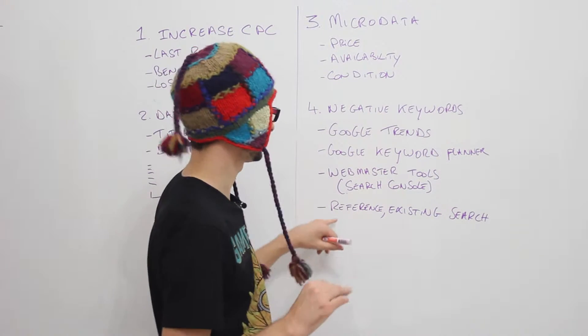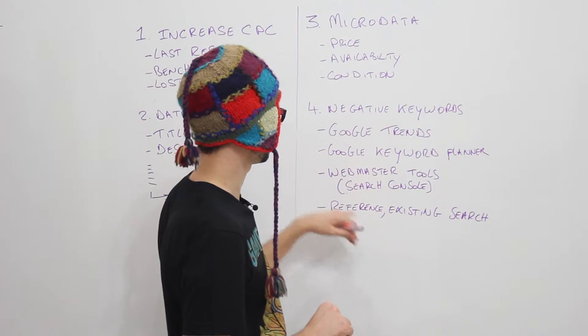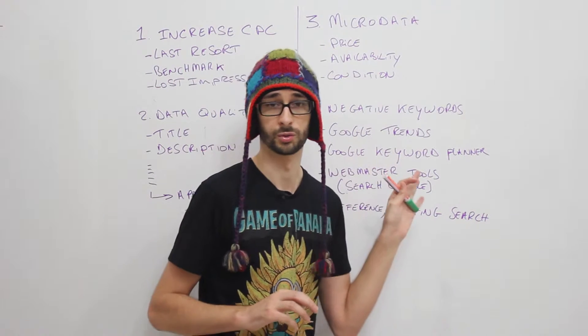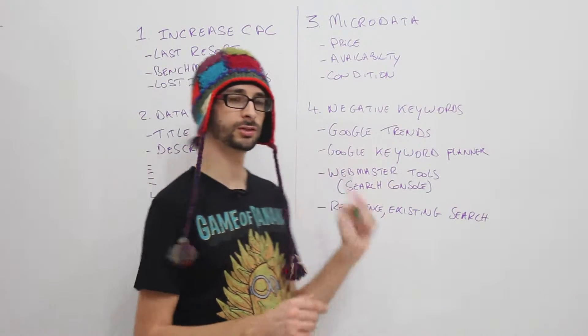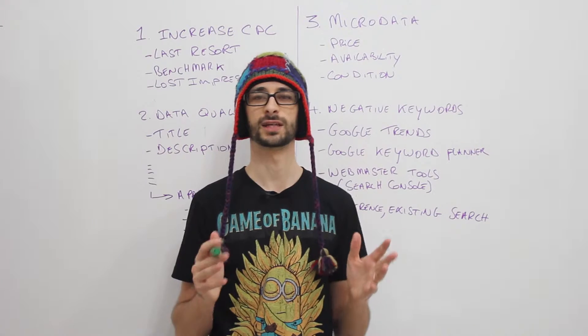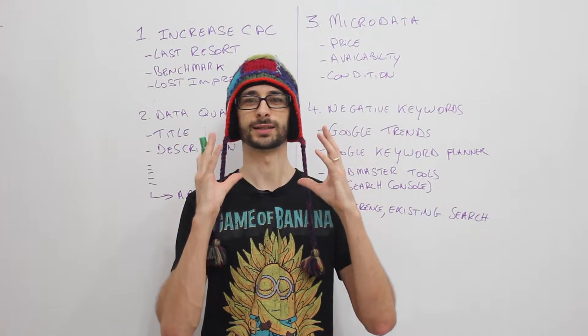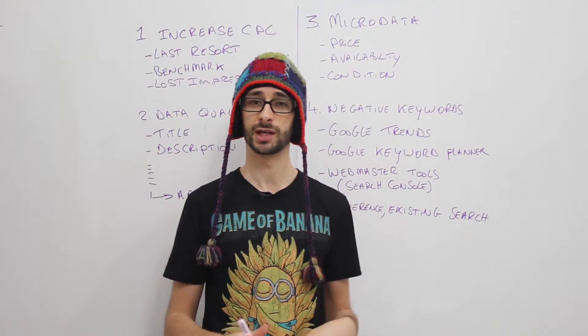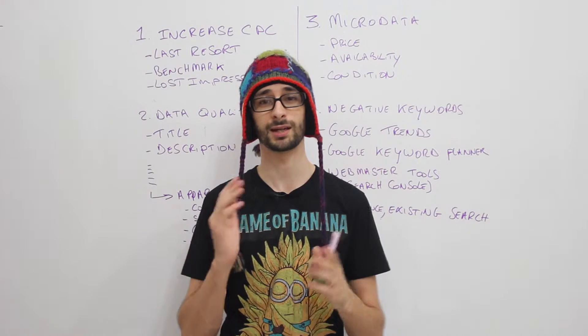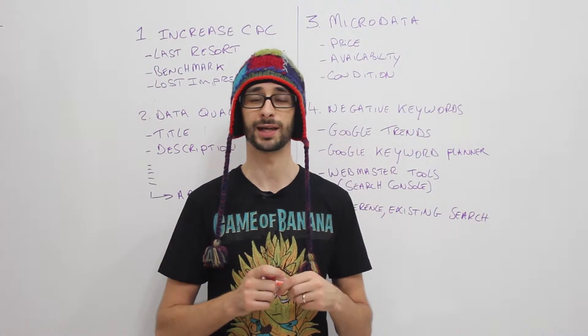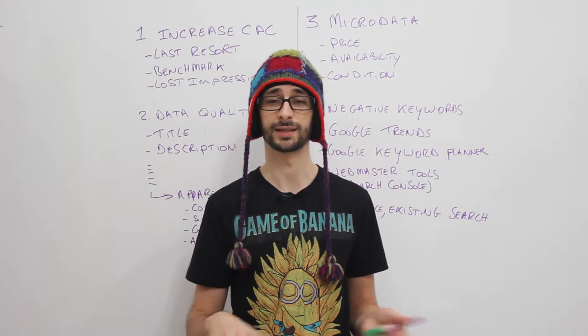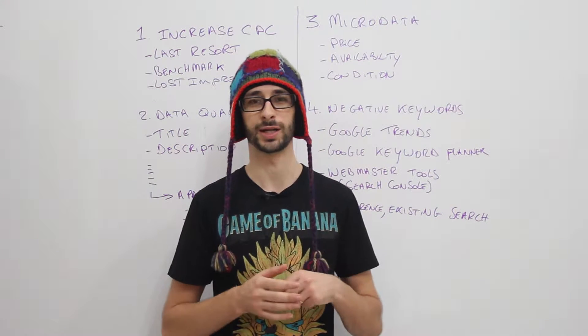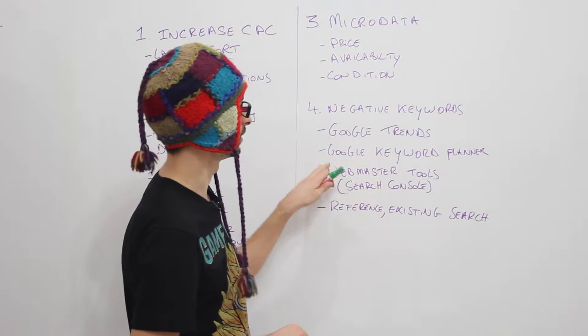So what I want you to do first is research your existing search terms by going to your webmaster tools, or it's called now the Search Console. So look into your webmaster tools, do a search for your negative keyword, and see if the impressions are quite high. If you have a high impression rate, then you can most likely correlate that exactly to your Google Shopping. So removing that negative keyword would increase your impressions. So that's quite important.